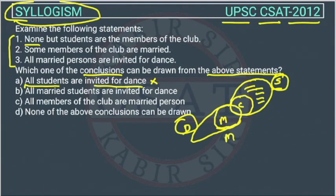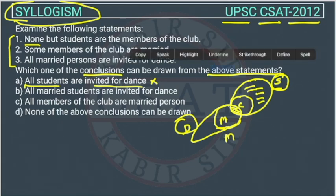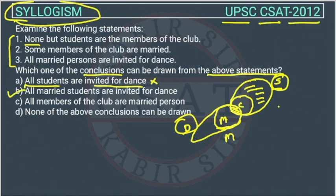The second conclusion: all married students are invited for dance. This is married and this is a married student. All married students are invited for dance — these people are also in the dance circle. This conclusion is correct because this area is in all three sets: married, student, and dance. So this is right.